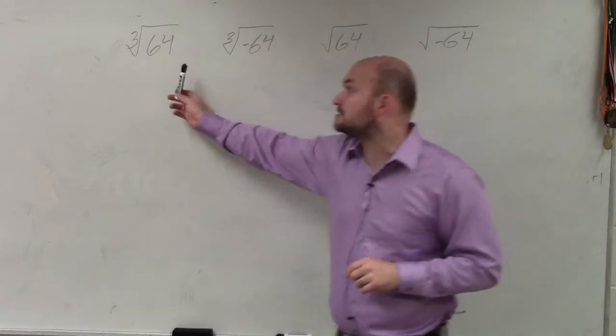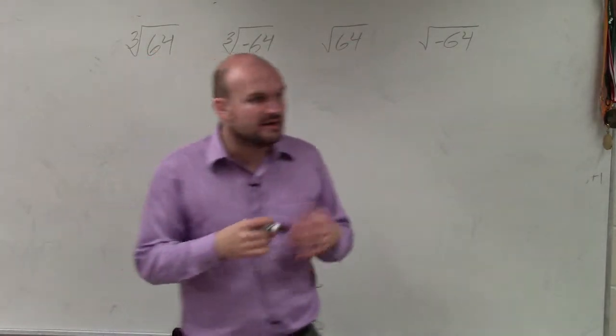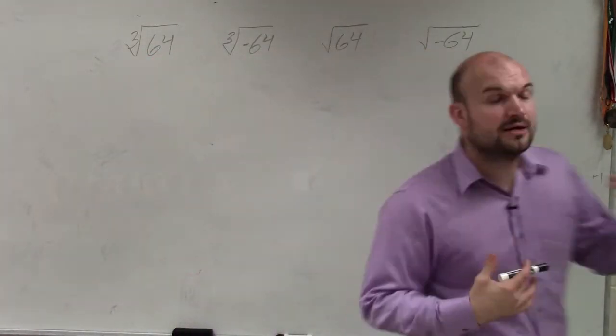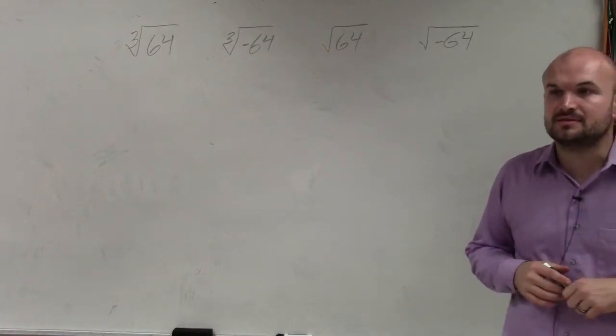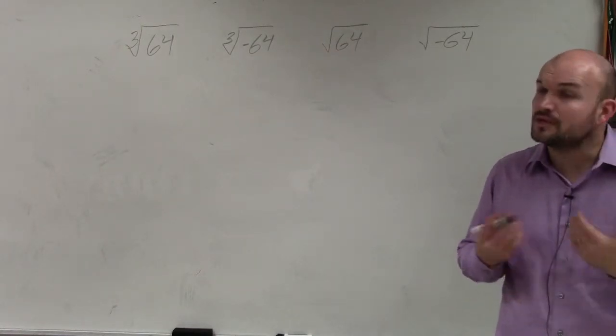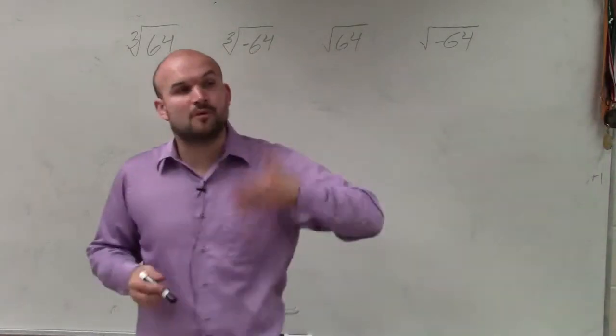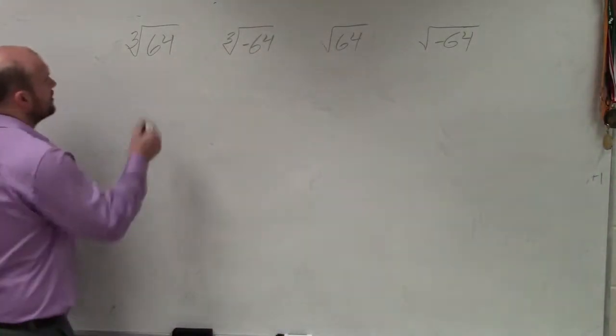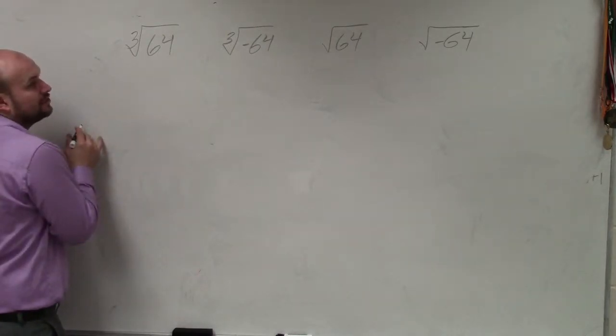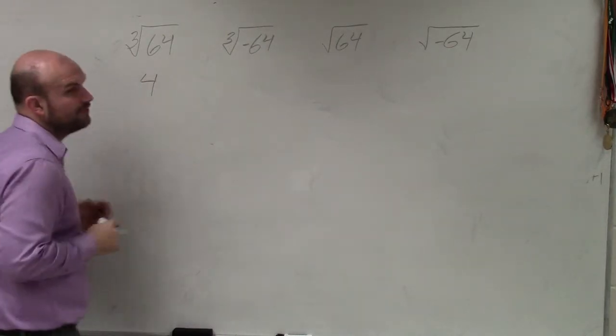When we're looking at this, guys, if we're taking the cube root of a number, basically remember the cube root states what number multiplied by itself 3 times is going to give you 64. Well, if you guys think about that, you can say 4 times 4 times 4 is going to give you 64. So the simplified answer of the cube root of 64 is just simply 4.